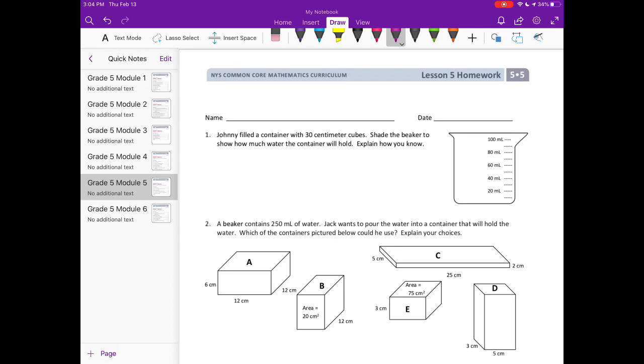Module 5, lesson 5 homework, number one. Johnny filled a container with 30 centimeter cubes. Shade the beaker to show how much water the container will hold. So 30 centimeter cubes, that's saying if you filled the container with it.